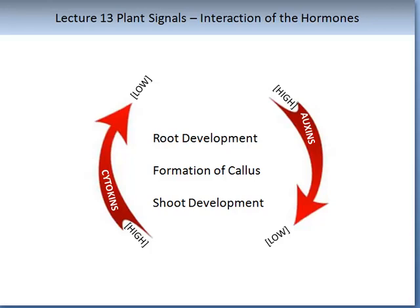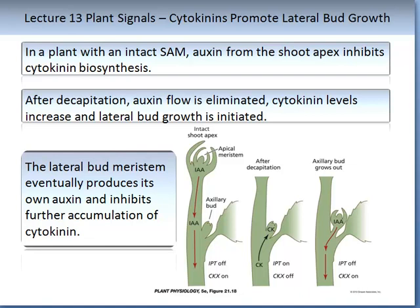Cytokinin promotes lateral bud growth. In a plant with an intact shoot apical meristem, auxin from the shoot apex inhibits cytokinin biosynthesis. After decapitation, auxin flow is eliminated, cytokinin levels increase, and lateral bud growth is initiated. The lateral bud meristem eventually produces its own auxin and inhibits further accumulation of cytokinin. After this lecture, please take time to review the wheat practical where shoot apical meristems were removed, and consider whether your results correlate with the observations discussed here.